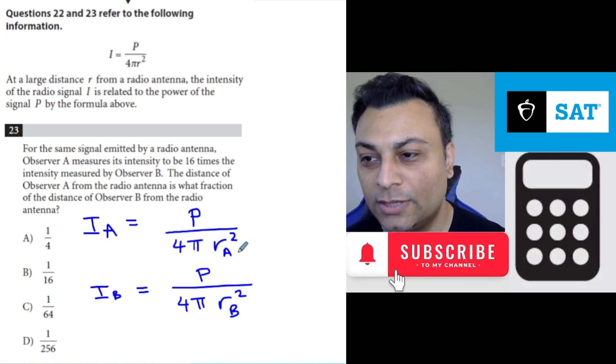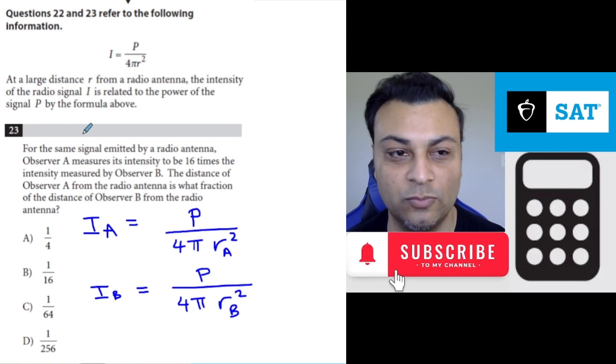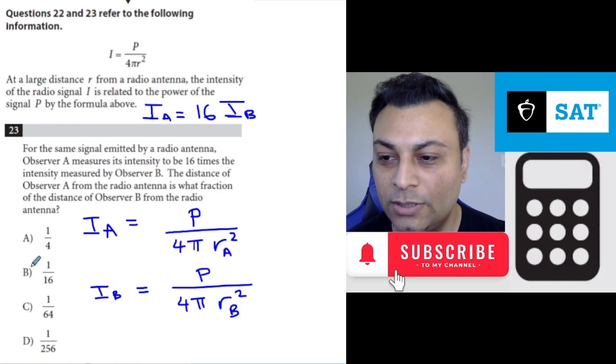Furthermore, Ia is 16 times Ib. That's what they're telling us, 16 times. So the intensity for A is 16 times the intensity for B. So this is simply 16 Ib is all that.